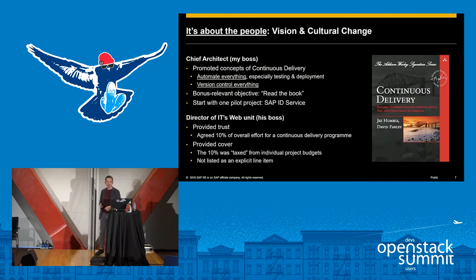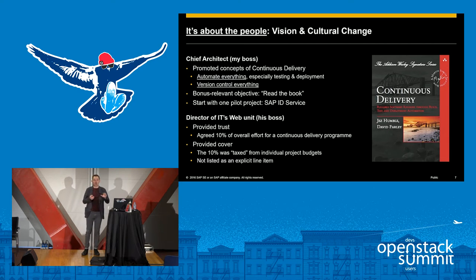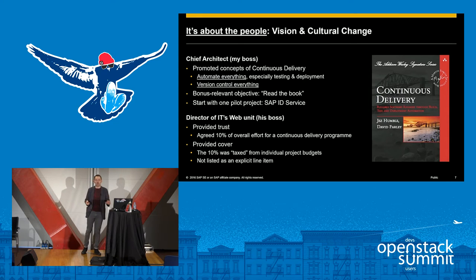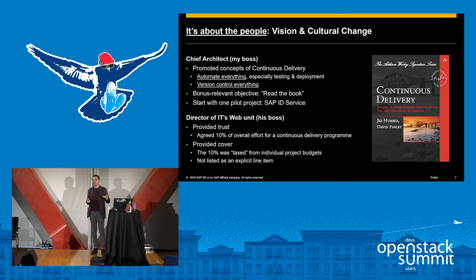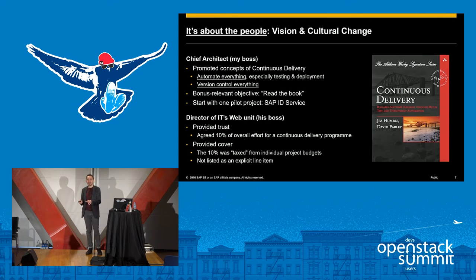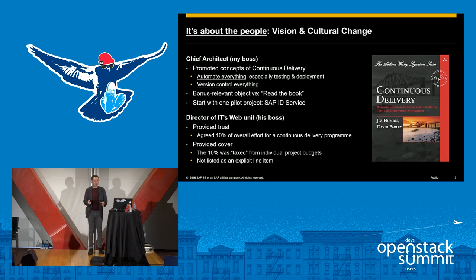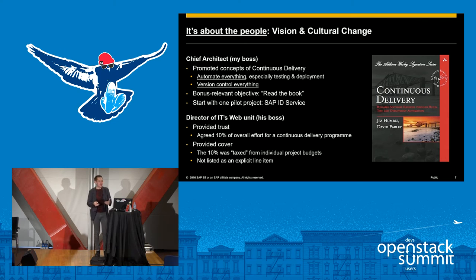This is a theme we'll return to a lot: it's all about the people. I'm going to talk about process and technology — they're helpful — but the people element is critical and it just will not work unless you address that. In our case, my boss the chief architect promoted a book. He did more than promote it: he basically said to everyone, get a copy. Reading this book is a bonus-relevant activity — if you have not read this book, you will not get your full bonus. So he really knew which levers to pull to get the whole team on board.